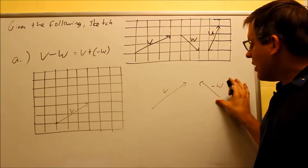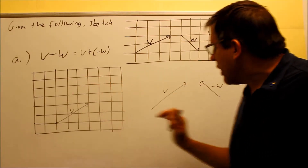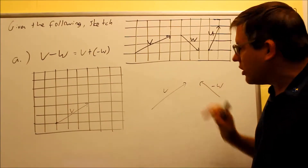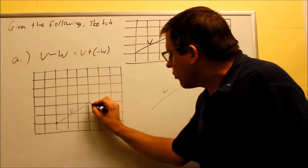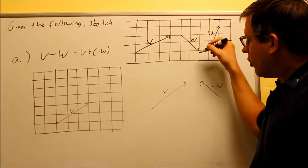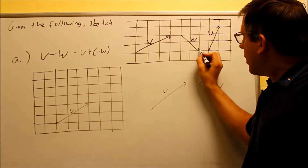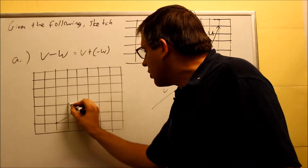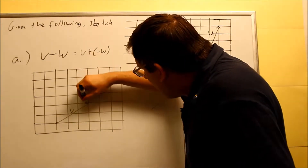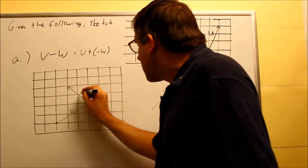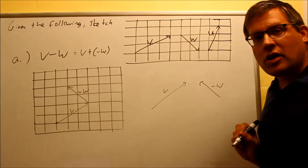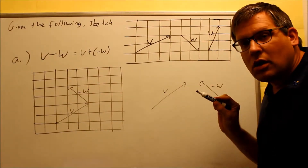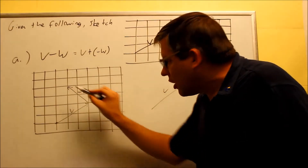Then I'm adding negative W. I can go ahead and add this one directly on here, because I'm adding these together tip to tail. I'm going to put it right here. Negative W still has a slant — it goes from here to the left and up two. I'm reversing the arrowhead, so I go to the left and up two, and I get that arrow. This is the drawing of negative W.